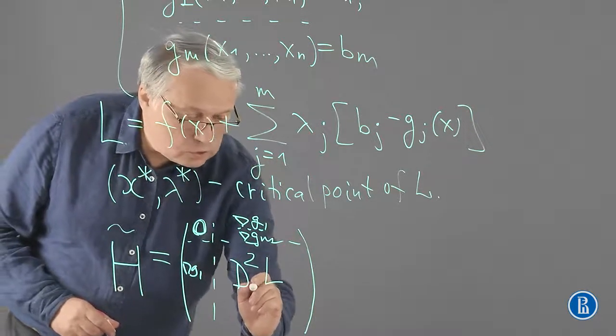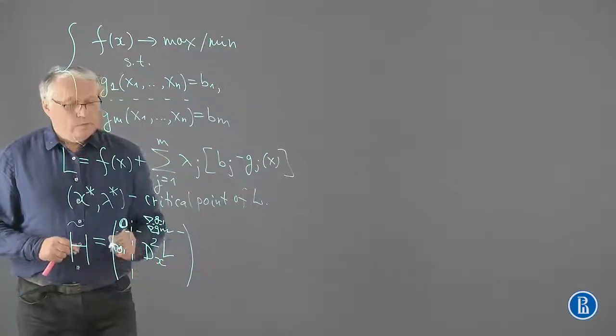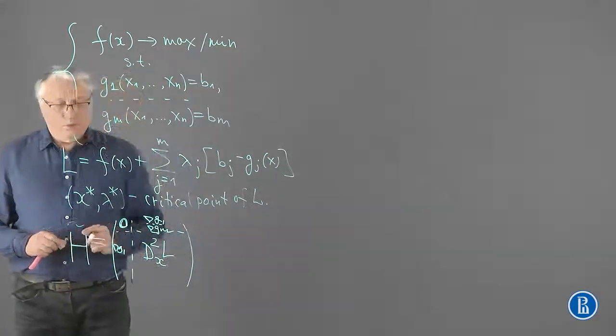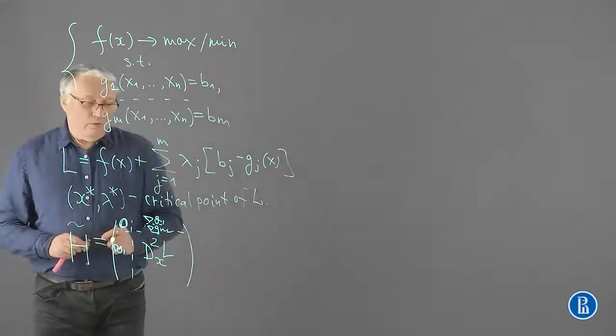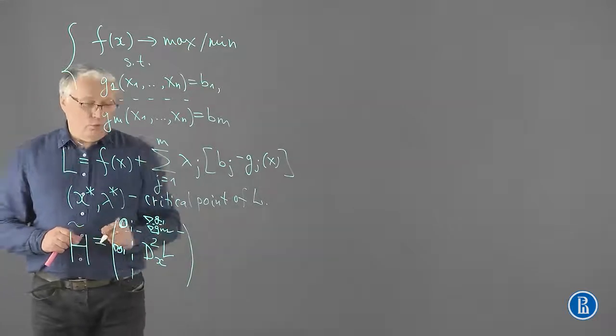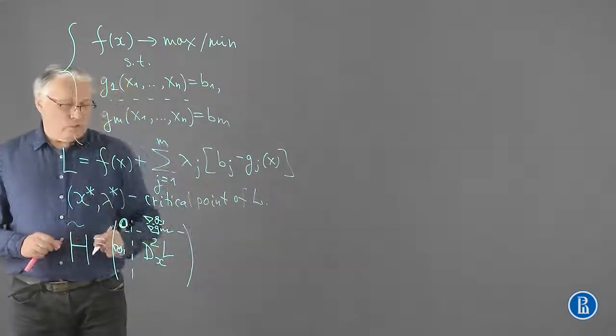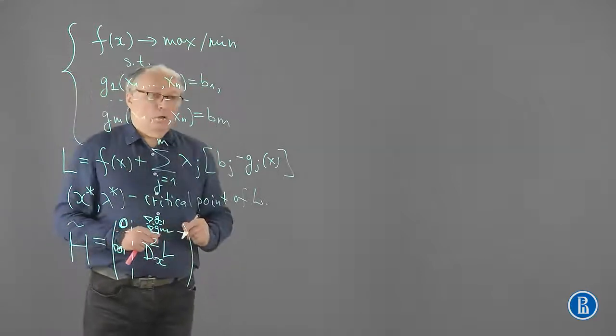So, we differentiate with respect to x. This is our bordered Hessian matrix, evaluated at a point x star, lambda star.